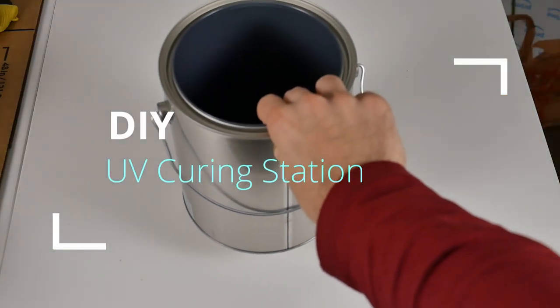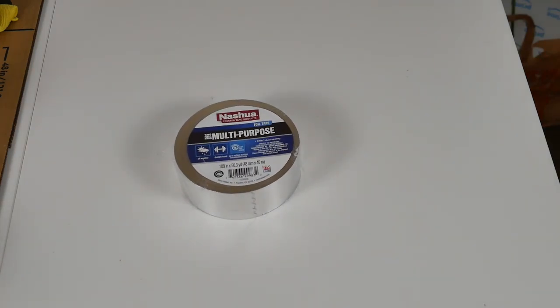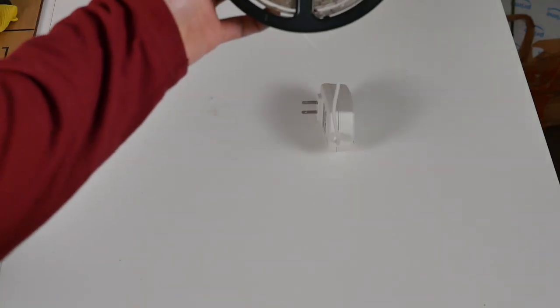My goal was to make something compact and relatively inexpensive. So the three things you'll need is a paint bucket. I just went down to Home Depot and picked up a gallon empty paint bucket for a few dollars. You'll need some foil tape. I also got this from Home Depot as well. This is way too much, but I've got enough for 10 of these things now.